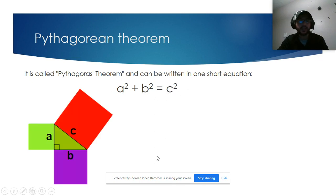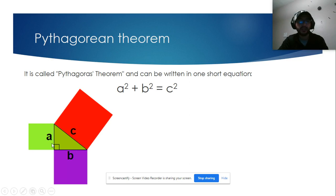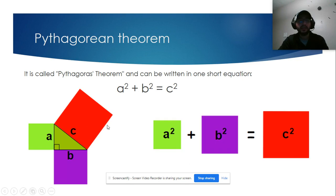The Pythagorean theorem works only for right triangles. A right triangle is a triangle with an angle of 90 degrees.